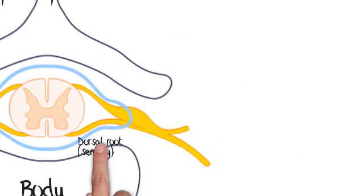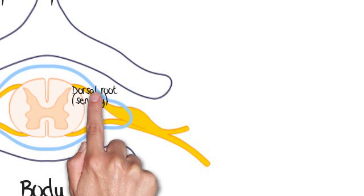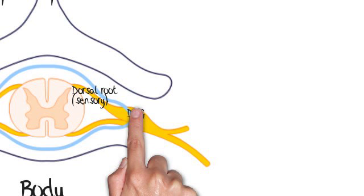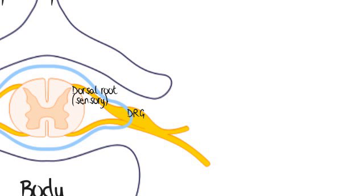Now let's label the dorsal root and then the dorsal root ganglion where the cell body is located, and the spinal nerve, which is a mixed nerve before it divides into the dorsal root and the ventral root.